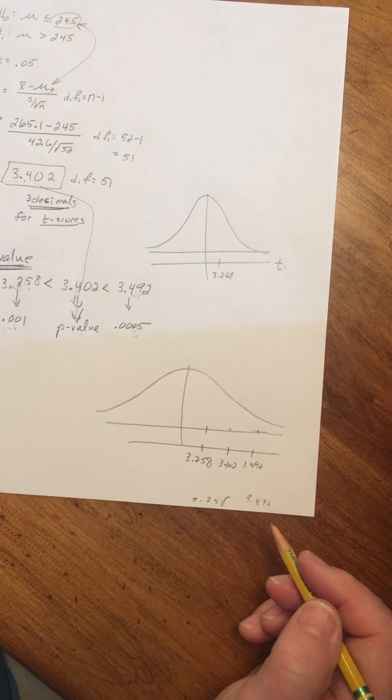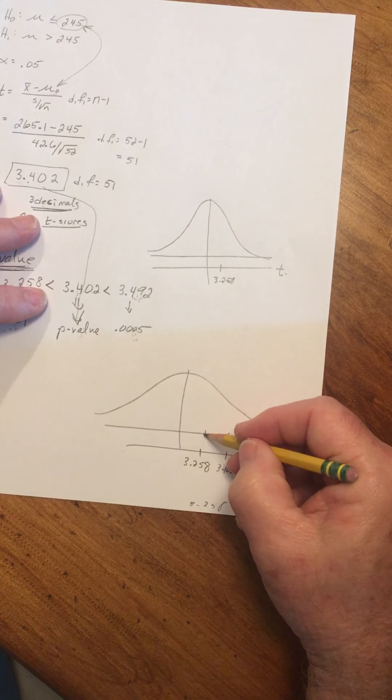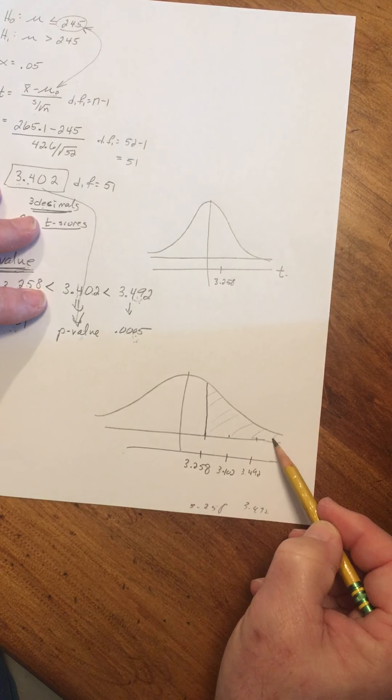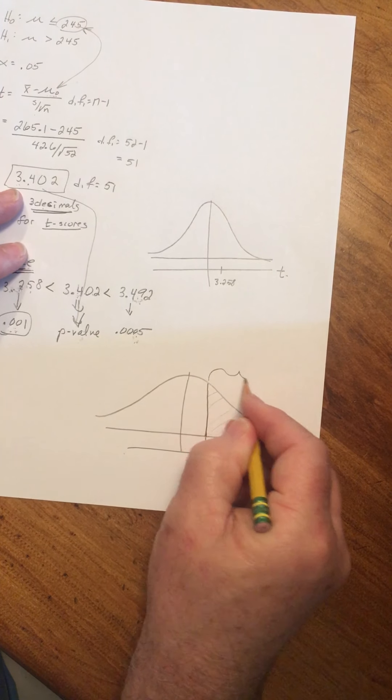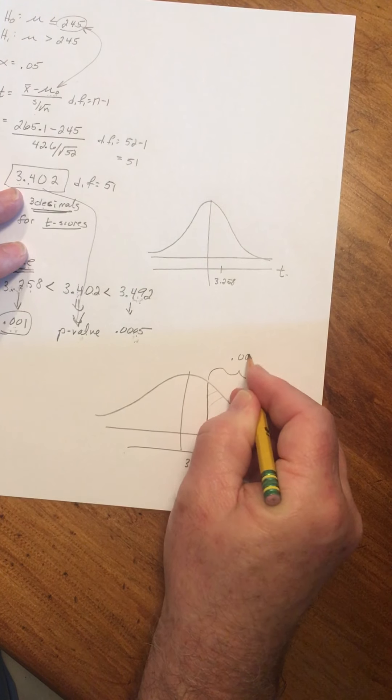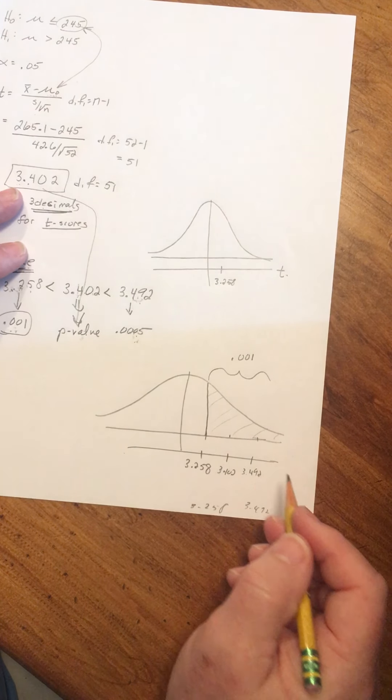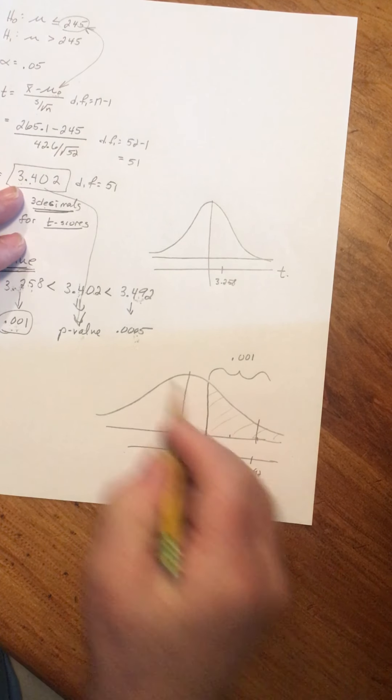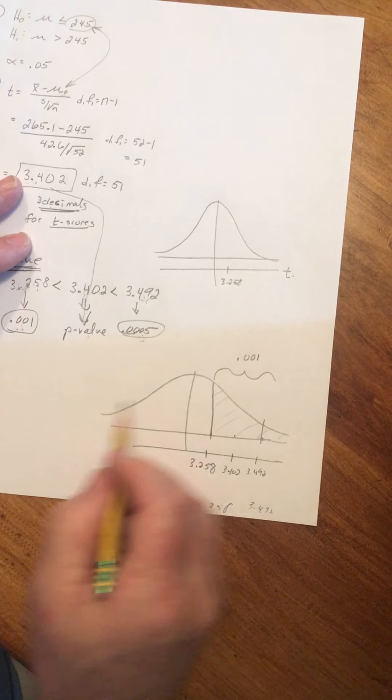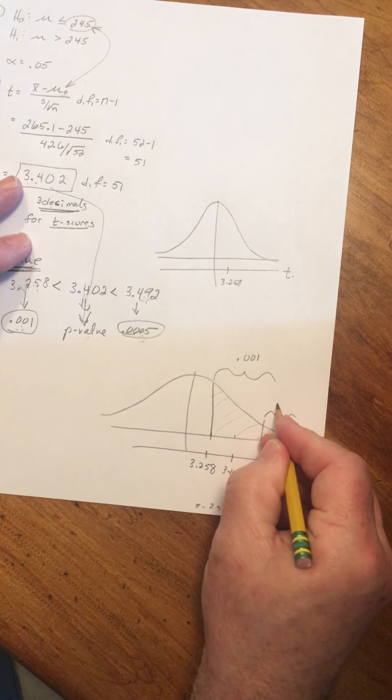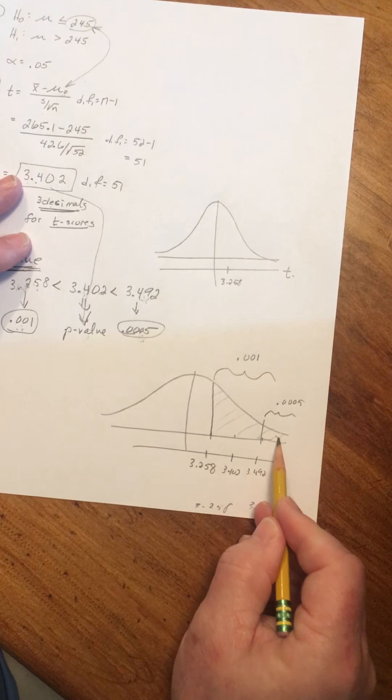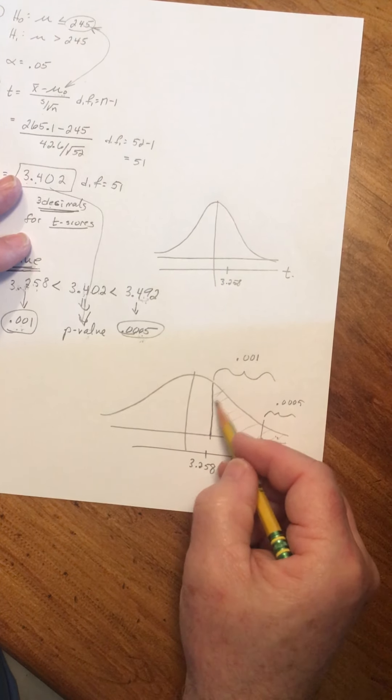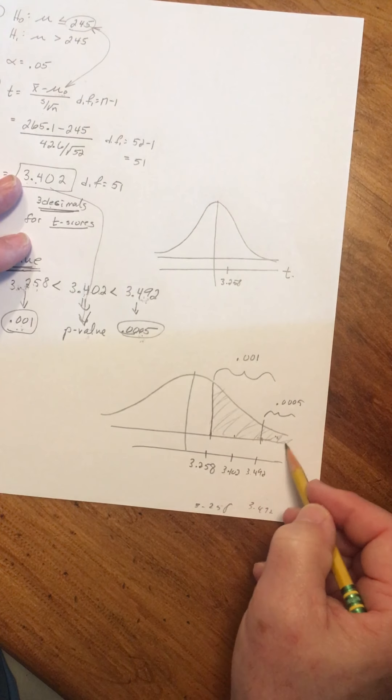If we erect these vertical lines, then this area is the .001. Erect this vertical line at 3.492, that corresponds to this number, .0005. We can see that's smaller. So the number .001, that is all of this area. That's the biggest.